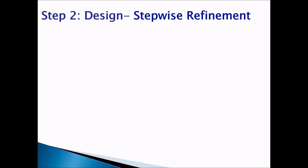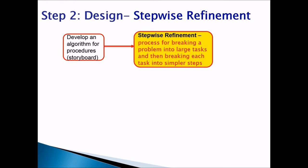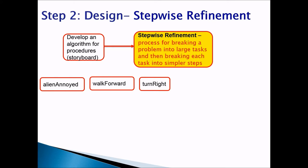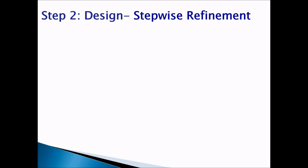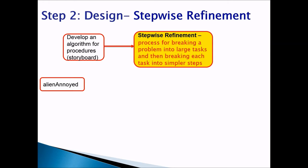Let's take a look at our step 2 design from the previous lecture. We did a stepwise refinement — we took our algorithm and broke it down into larger tasks. We divided the alien encounter problem into those larger tasks.